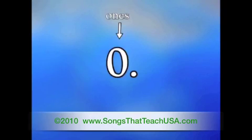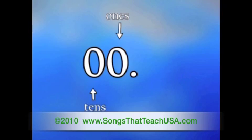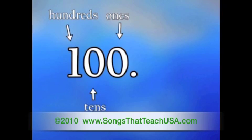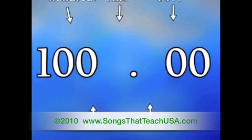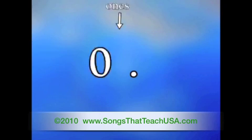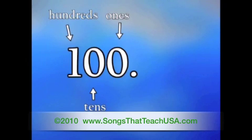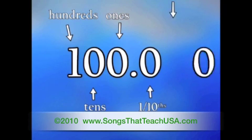To the left of the decimal are the ones, tens, and hundreds. To the right of the decimal are the fractions — tenths and hundredths.